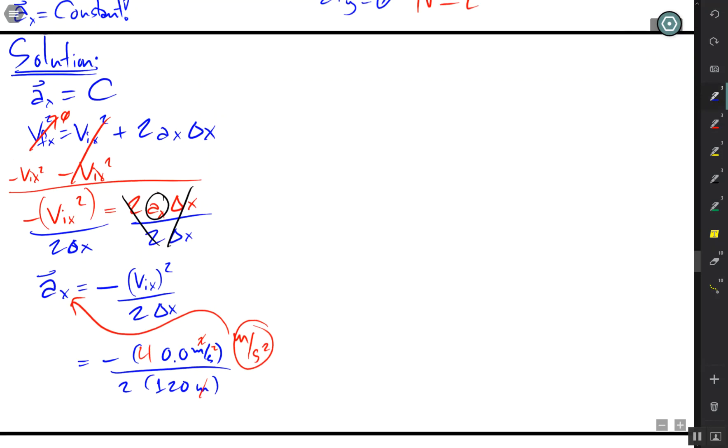Okay, so check this out. The value of the acceleration that we actually get is most certainly negative, 1.67 meters per second squared. Okay, cool.